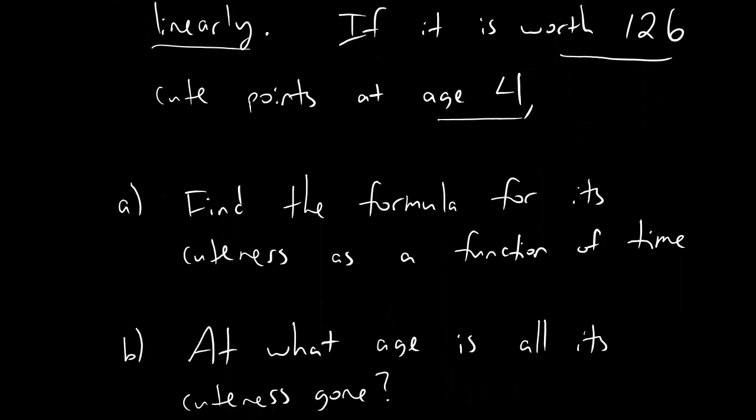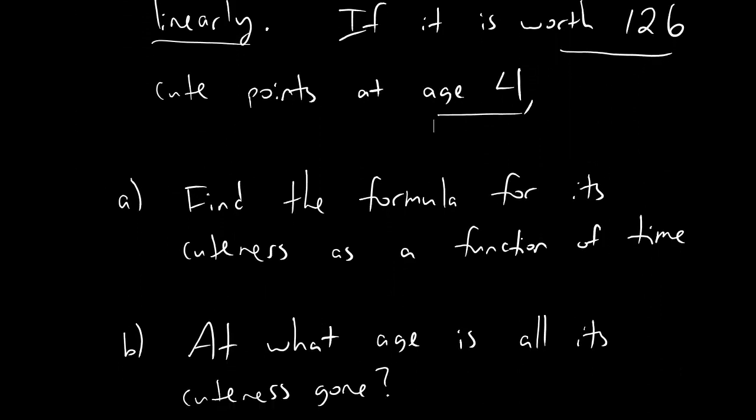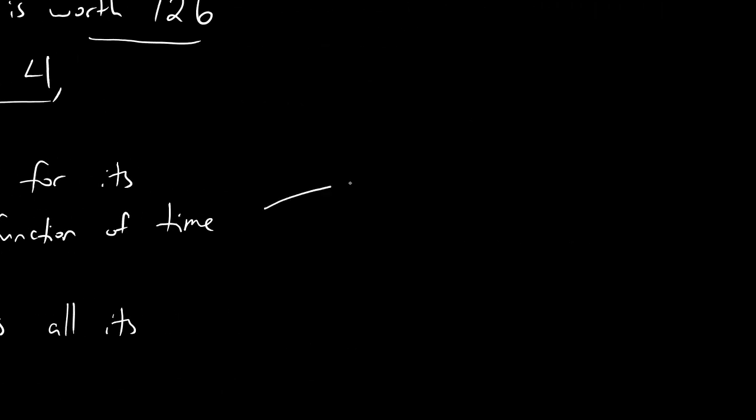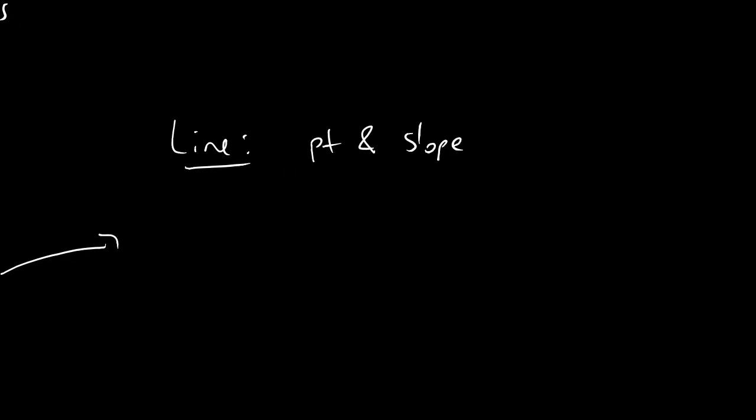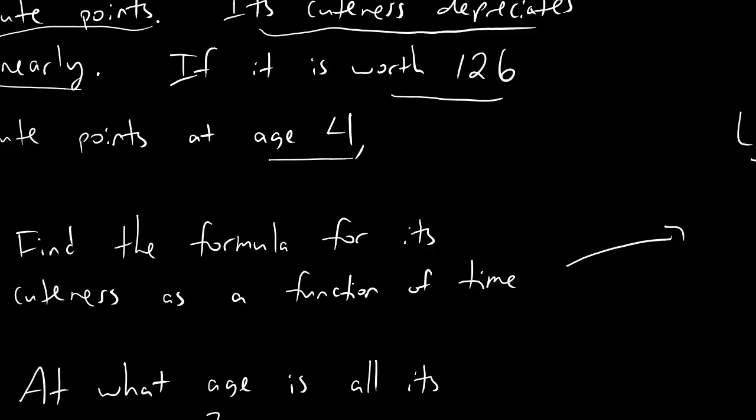And that's just fancy math talk for saying that the equation we're going to be using is going to be a line equation. We're also given the fact that it's worth 126 cute points at age 4. Then they go on to ask the first question. I don't know why I'm saying they, because it's actually me. I'm writing these problems. I go on to ask the first question: find the formula for this baby's cuteness as a function of time. So let's move off to the right hand side here. We're going to do the usual thing. We're going to find the function, but the function's a line, so we need point and slope. We have two points actually.